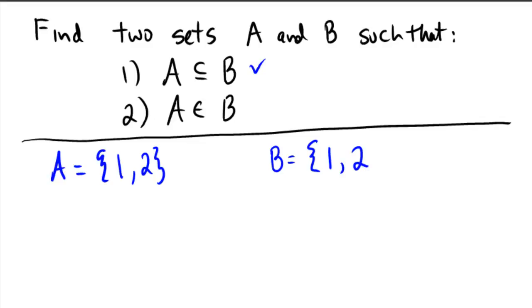Now, to satisfy condition number two, condition number two says A has to actually be an element of B. So notice that A is the set that contains one, two, and we need to have that be an element of B. So in set B I'm also going to have to put the set that contains one, two, because that is literally what A is. And that would be enough to complete the problem because now we've satisfied that A is also an element of B. So I chose the elements in A to go inside of B, and then I chose the last element of B to be the set that contains everything inside of A.